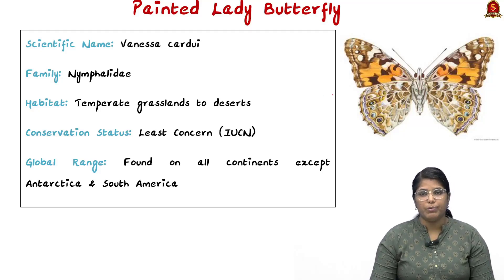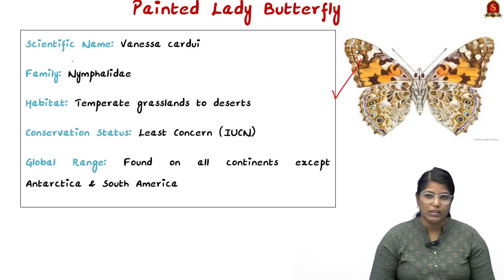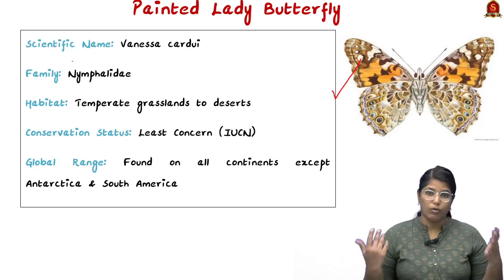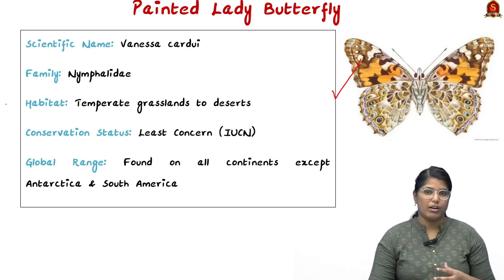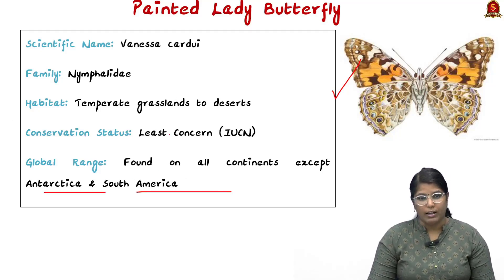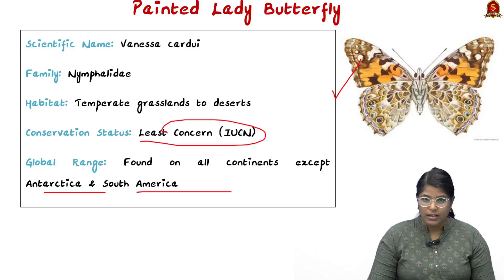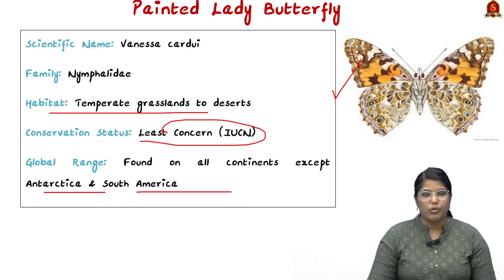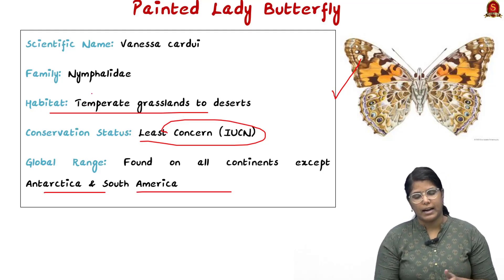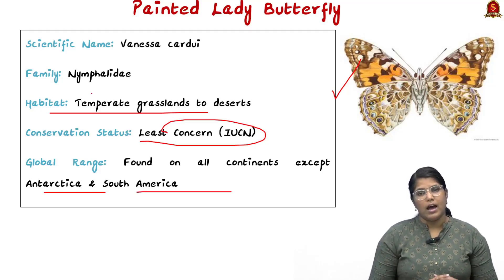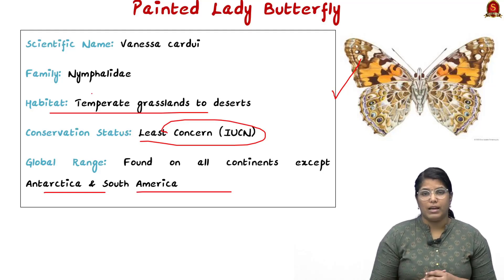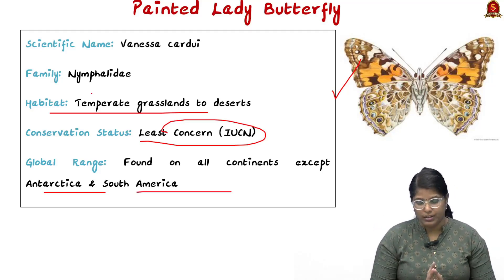The painted lady butterfly is a very unique species because it travels around the world. The only places you cannot see it are Antarctica and South America. It is Least Concerned on the IUCN Red List. Its habitat ranges from temperate grasslands to deserts, and it is well renowned for its migratory pattern — it migrates all around the world.